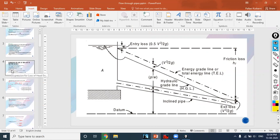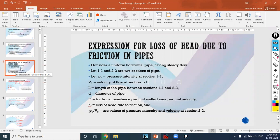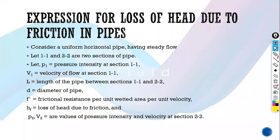We will continue from the last lecture. We saw two types of losses: major loss and minor loss. Major loss is called friction loss, and we started the derivation for major loss, that is the Darcy-Weisbach equation. When in an exam it is asked to derive the Darcy-Weisbach equation, it is analogous to the derivation for major loss due to friction in pipes.